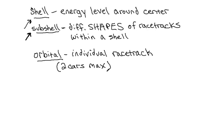Every time you get to a bigger shell it starts all over again — you have more racetracks with more shapes on it. Now this shell, the energy level, we're going to call this N — lowercase n.